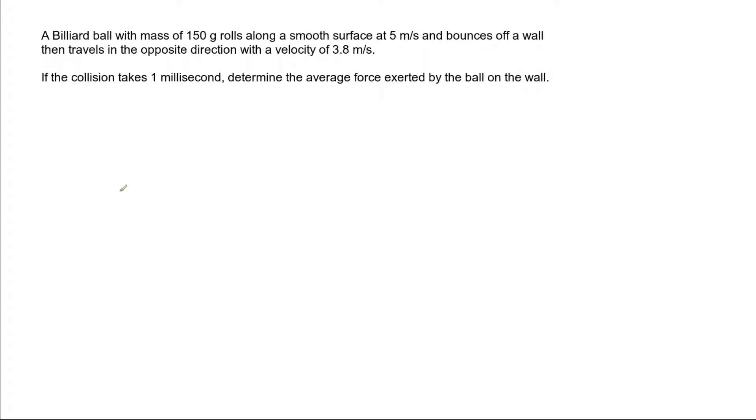Hi, in this video I'm looking at this problem where we've got a billiard ball rolling along a smooth surface. It bounces off the wall, travels back the way it came, but with a change in velocity. It started off at 5 meters per second and finished off traveling at 3.8 meters per second. And we're told that if the collision takes one millisecond, what is the average force exerted on the ball by the wall, or by the ball on the wall, equal either way.